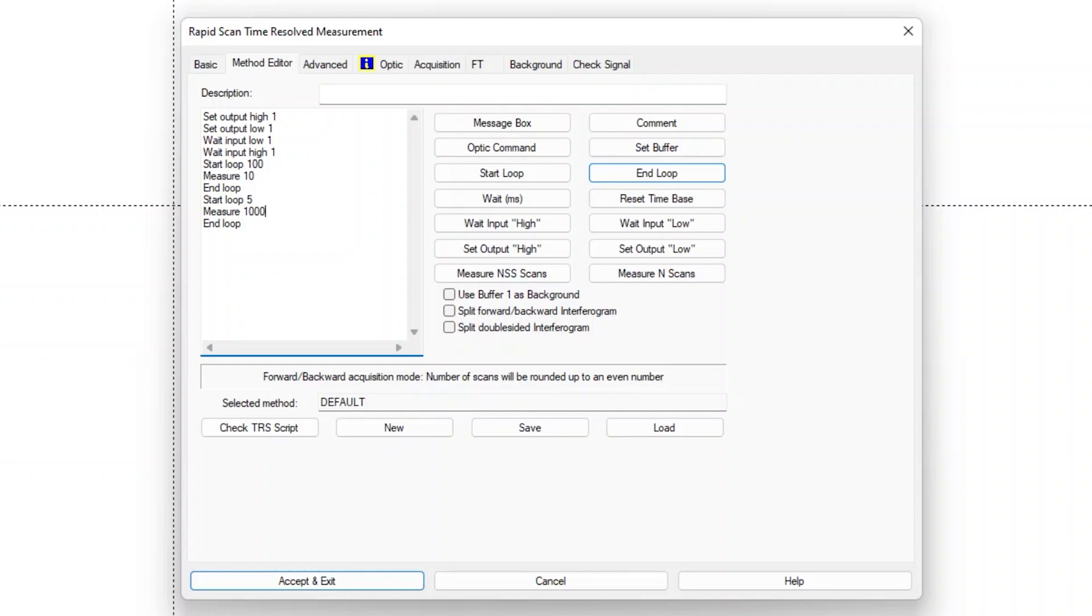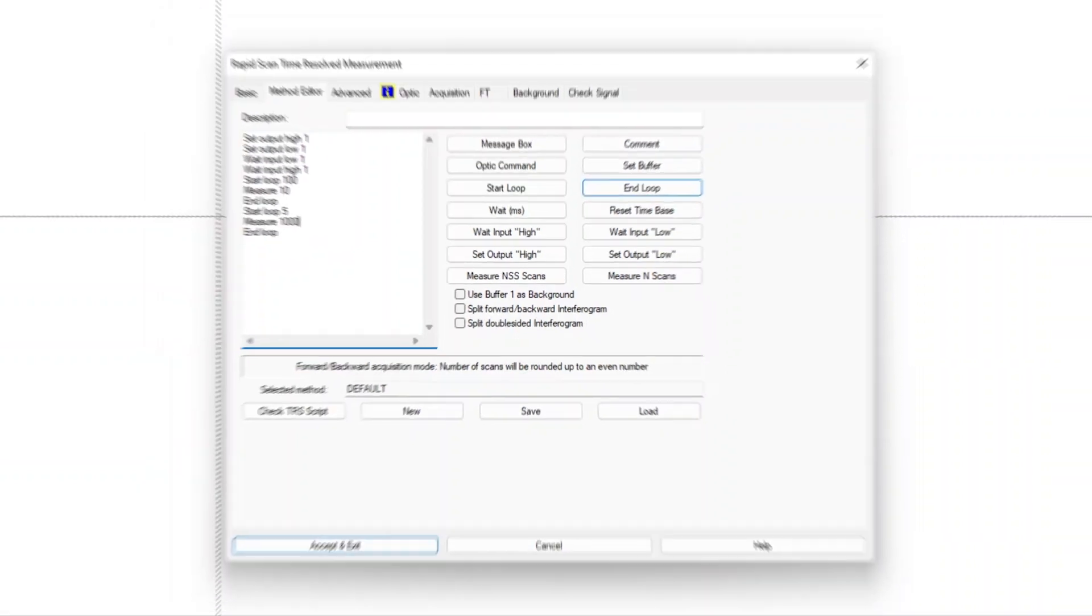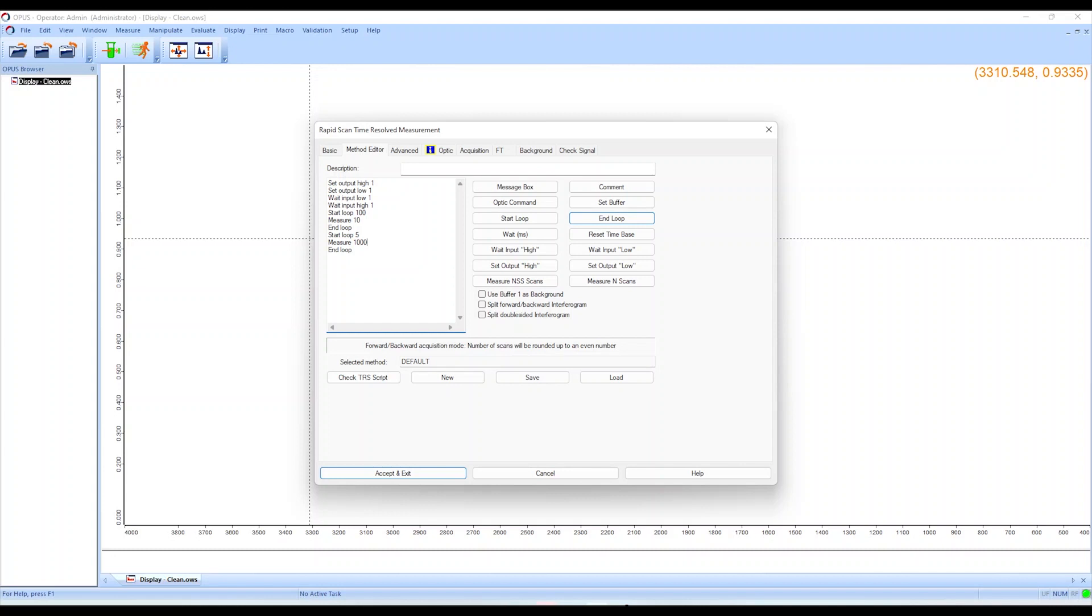All spectra will be then presented in one 3D plot. More details about RapidScan method editor can be found in another video listed below.